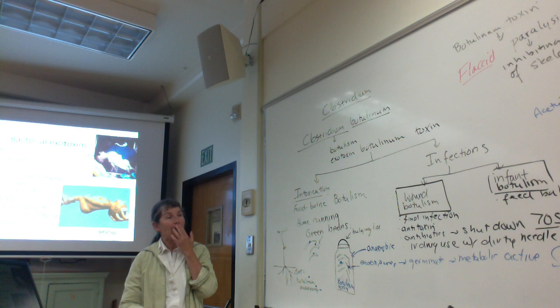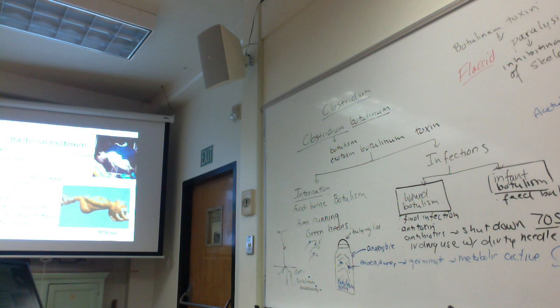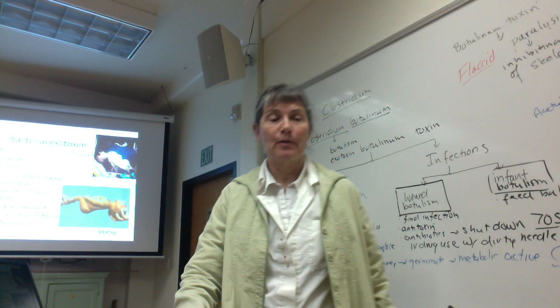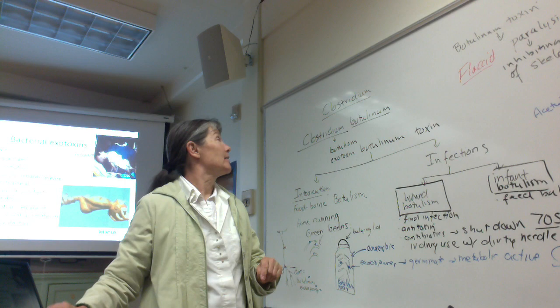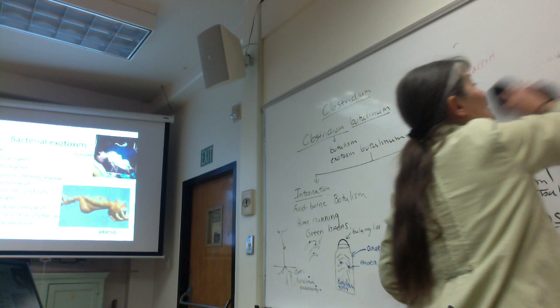In summary, the two infection types of botulism caused by Clostridium botulinum are wound botulism and infant botulism. The intoxication type — foodborne botulism — occurs through ingestion of preformed toxin in improperly processed canned vegetables with a high pH. Now let's look at Clostridium botulinum's close cousin, Clostridium tetani.